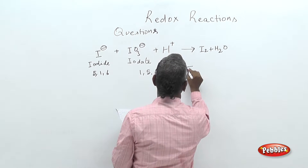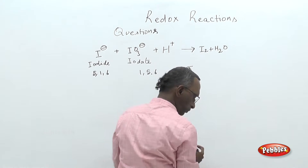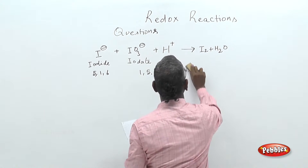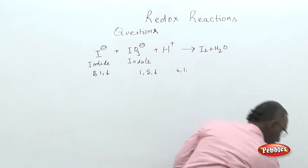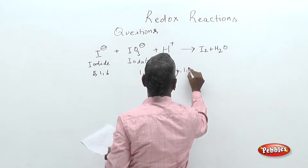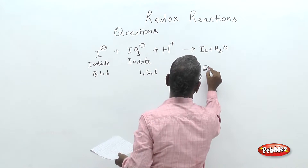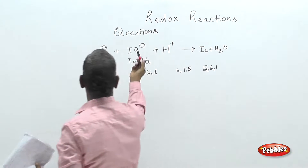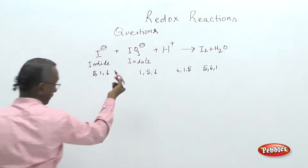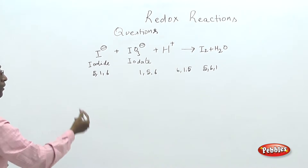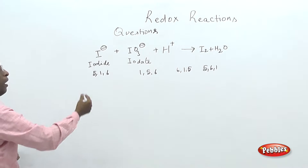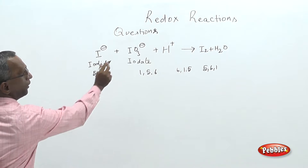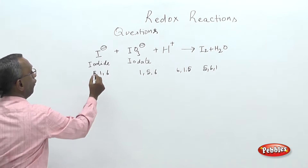The next choices are 5, 6, 1, 5 and 5, 6, 1, 5 and 6, 1. There are two methods to solve this: either by the IO₃ method or any other method. You can also check by trial and error, as it is a direct question.